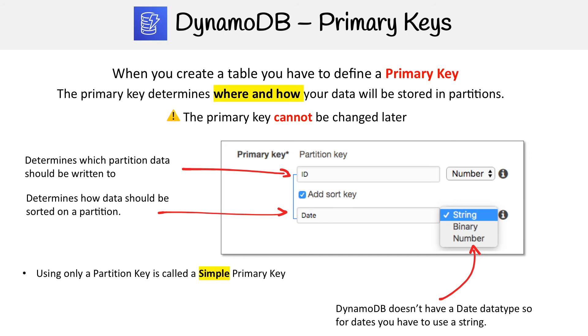There are two types of primary keys. There's one called a simple primary key, where you only use a partition key. And then you have a composite primary key, where you have both a partition key and a sort key that together make up your primary key.